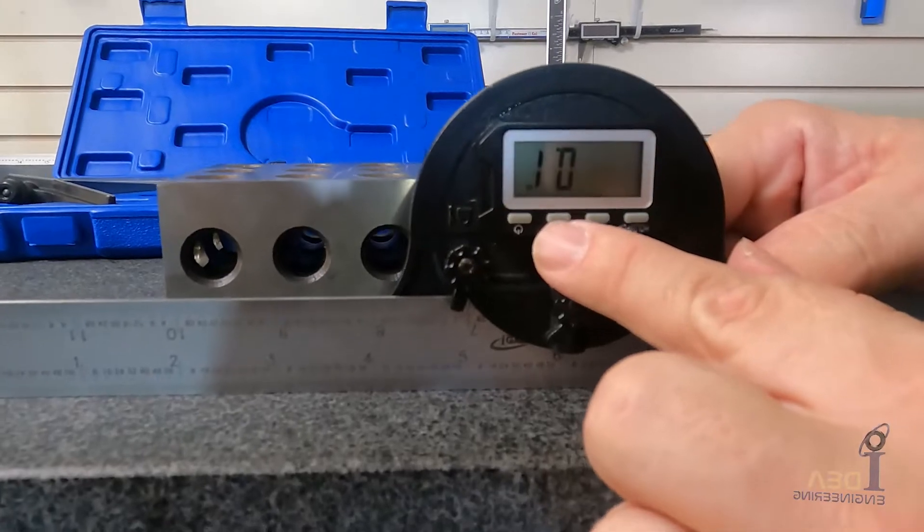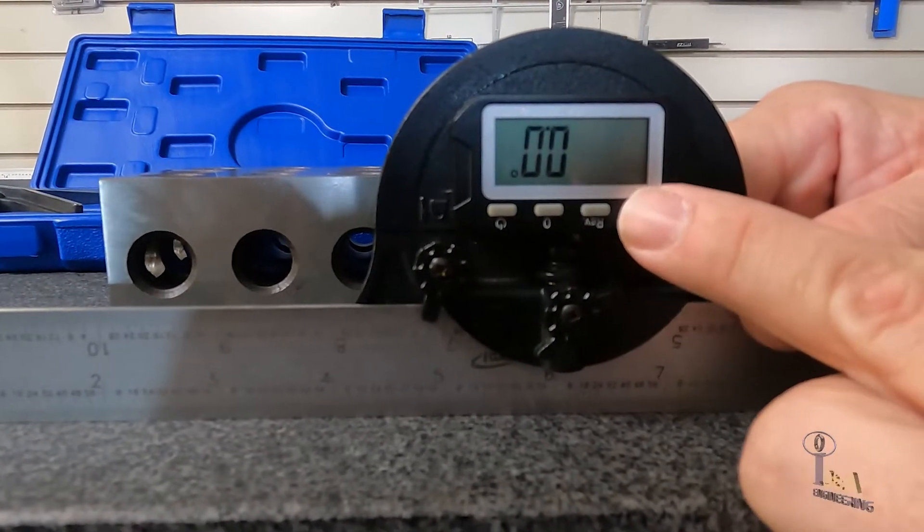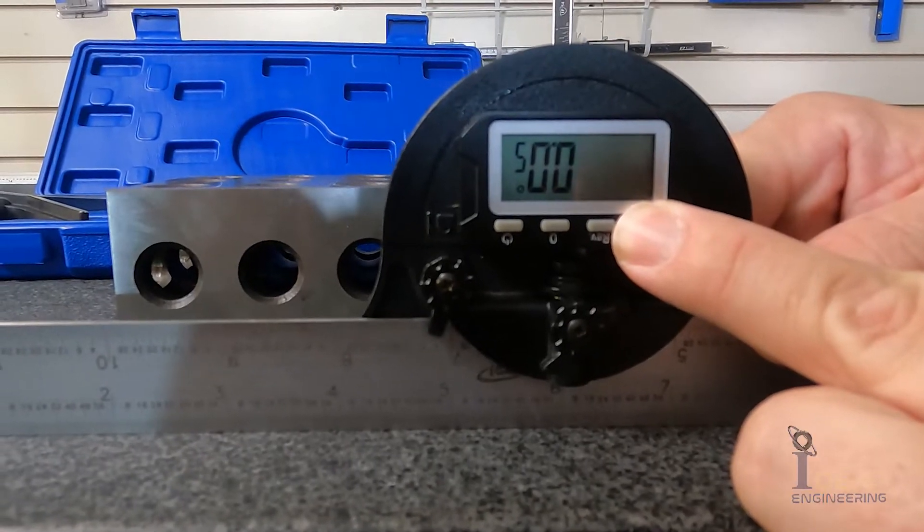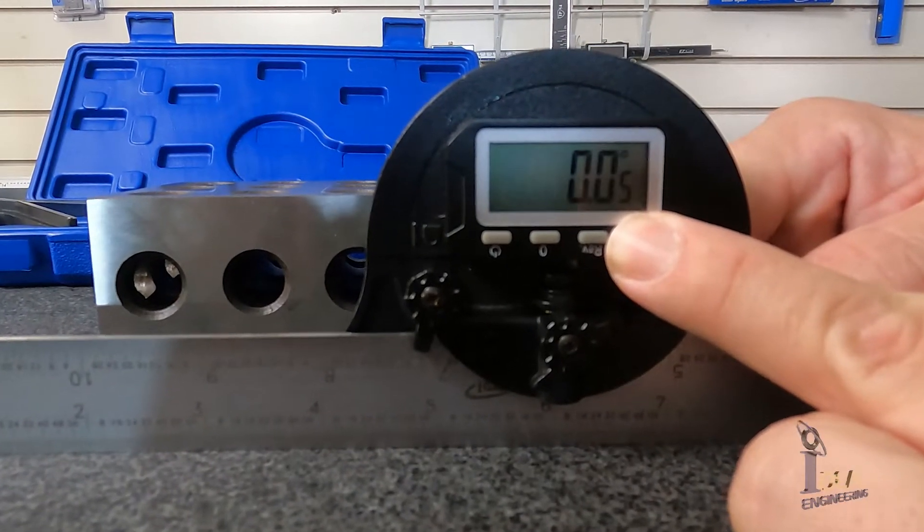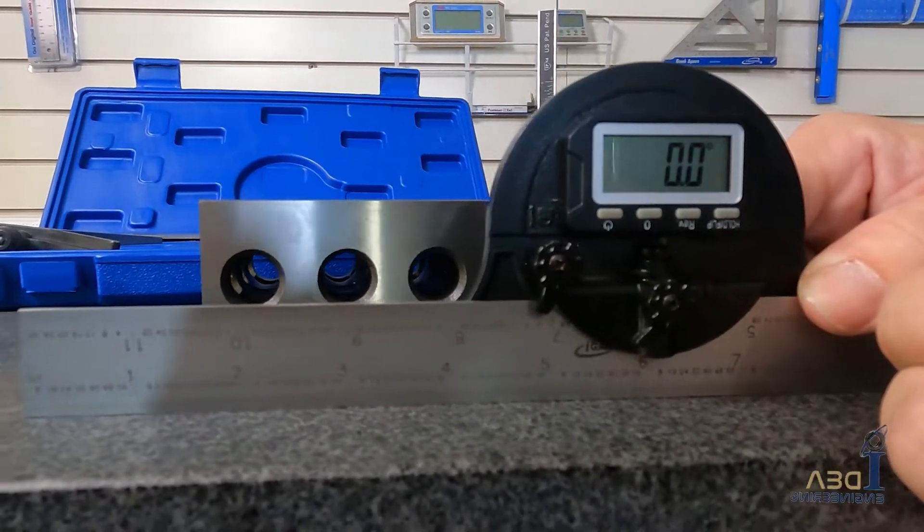As you may see, this is upside down, right. So you want to make it right side up. You can hold this button down for a second and it actually flipped the display over so you can read it the other direction so you don't have to read numbers upside down.